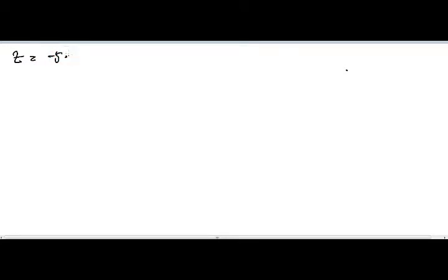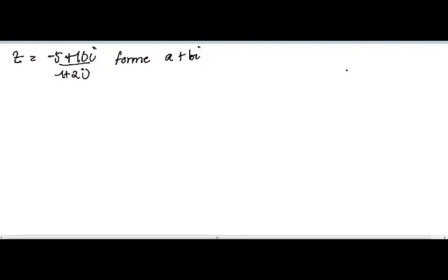In this question, we are given z to be (5 + 10i) divided by (1 + 2i). We are asked to express it in the form a + bi. So we are given z and we are asked to express it in this form — that's for part a. Let's start. We know z is the same as, let's rewrite our z.